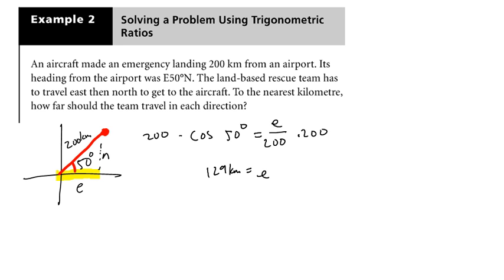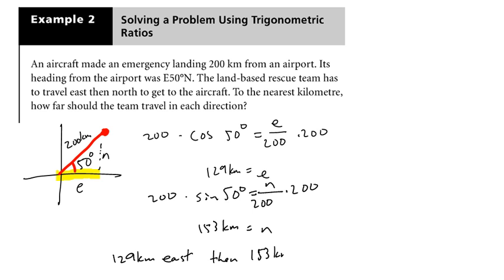N, do the same thing, except we're going to have to use sine because N is opposite the 50 degrees. So I get sine of 50 degrees equals N over 200. Multiply both sides by 200. And in this case, I get N equals 153 kilometers to the nearest kilometer. So up here in rural northern Saskatchewan, the team is going to have to get on a road and go 129 kilometers east, then 153 kilometers north.